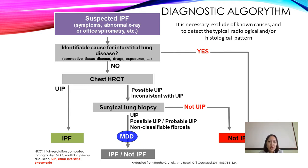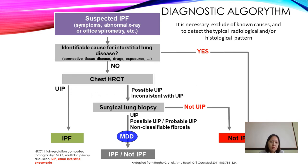The diagnostic algorithm for suspected IPF: start with symptoms, abnormal chest X-ray, and office spirometry. Then identify whether there is an identifiable cause of ILD. If no cause is found, perform HRCT. If HRCT findings are consistent with IPF, write the diagnosis IPF. If not, decide: possible IPF, inconsistent with IPF, or proceed to surgical lung biopsy. If biopsy is negative — no IPF; if positive — diagnose IPF.